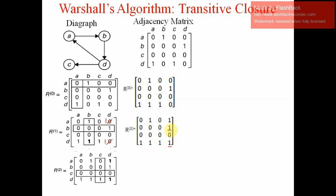Next we find R3 based on R2 by moving the reference box to the third row and column. We check all remaining values: most are 0 with both reference values being 0, and the existing 1s are left as they are. No changes occur when deriving R3 — it remains the same as R2.